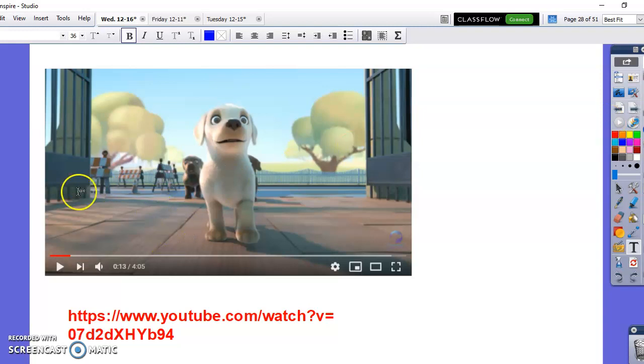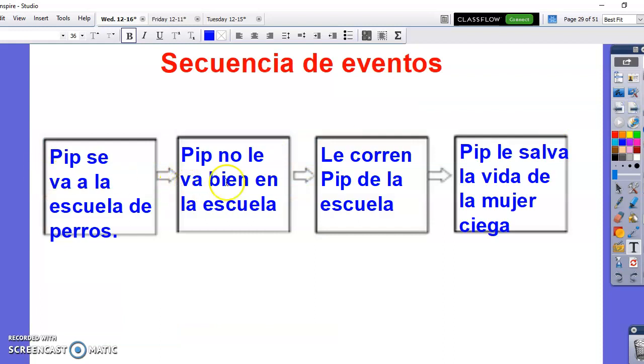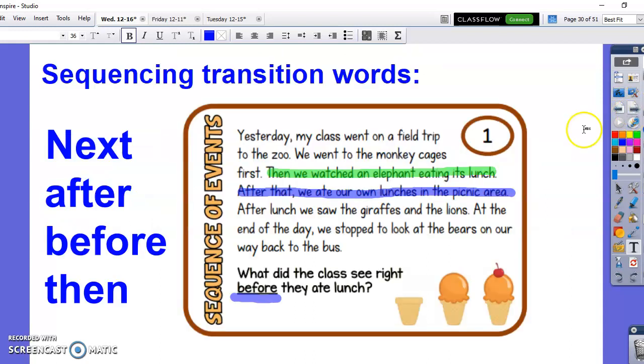Remember, sequence of events is what we have when we filled out the boxes for the major events of the movie Pip. And then we practiced with the words, identifying the sequencing or transition words, like next, after, before, and then, as you'll see in questions that regard sequencing, like what did the class see right before they ate lunch?